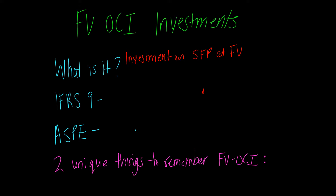What happens to the changes in the value of the investments if the investments go up or down from period to period? The unrealized gains and losses are going to be recognized in OCI, or other comprehensive income. That's an overview of the fair value OCI model.